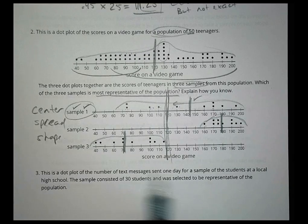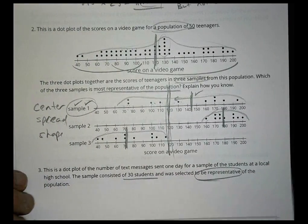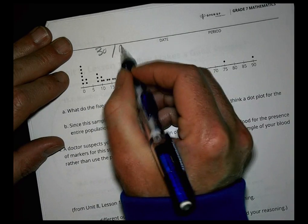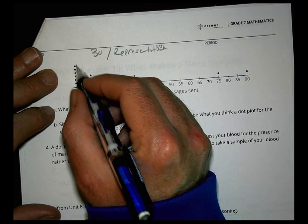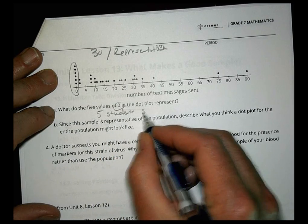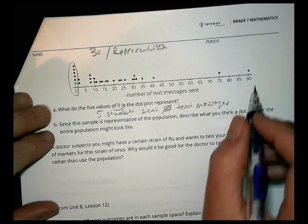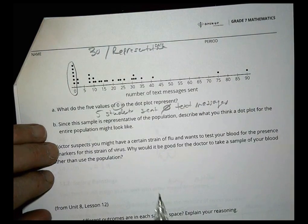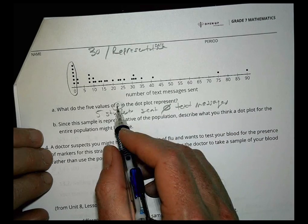Problem 3 shows a dot plot of text messages sent in one day for a sample of 30 students, selected to be representative. There are five values at zero. What do those represent? They mean five students sent zero text messages that day. The teacher notes humorously that a truly representative sample of kids would show much higher numbers based on actual phone usage!